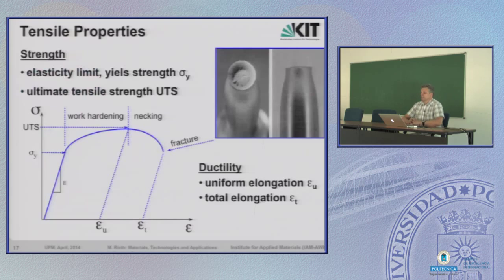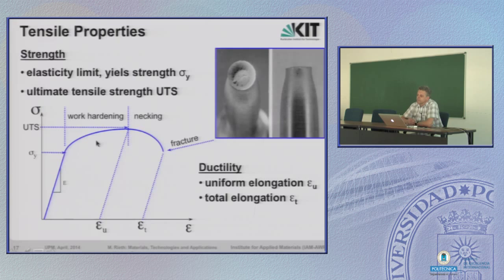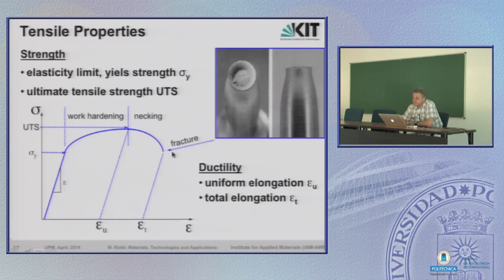Now let's come to the tensile properties. In the usual tensile test, we have a region of elastic deformation from which we derive the elastic modulus. Then, at the point of yield, we have the onset of plastic deformation and work hardening. The ultimate tensile strength is the maximum point in the stress-strain curve. Beyond that, the material shows necking and finally fractures. The characteristic values are yield strength, ultimate tensile strength, uniform elongation, and total elongation.